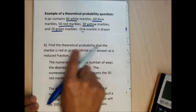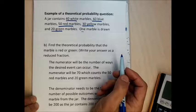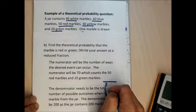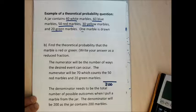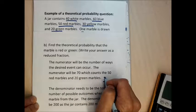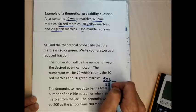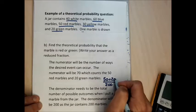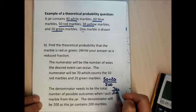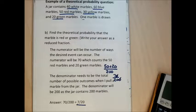Find the theoretical probability of getting a red or a green marble. Form a fraction with 200 in the denominator. A success is getting red or green: there are 50 red marbles and 20 green marbles, giving 70 marbles that qualify as red or green. So the probability is 70 over 200, which reduces to 7 over 20.